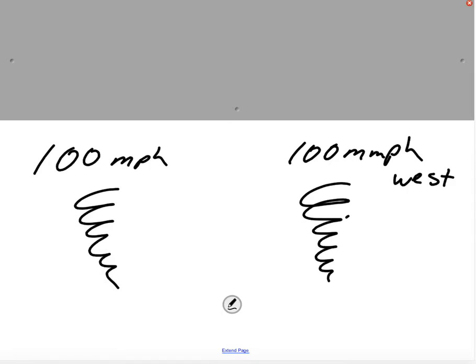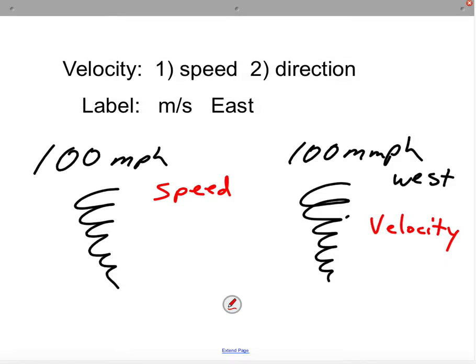So this is the difference between these two: the first scenario deals with speed, and the second one deals with velocity. They're very similar. The main difference is that velocity is speed and direction.